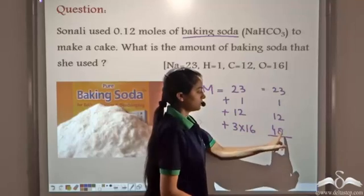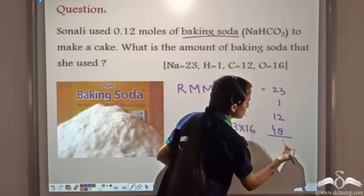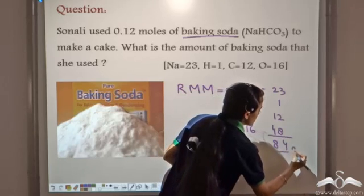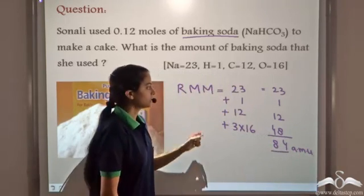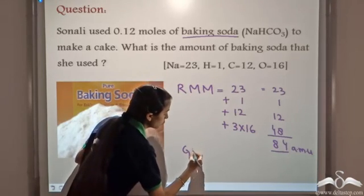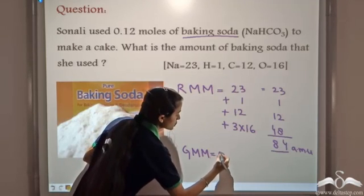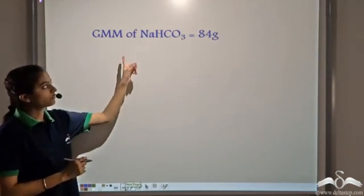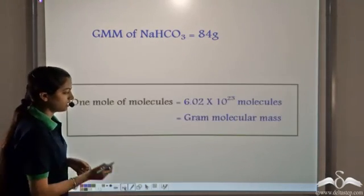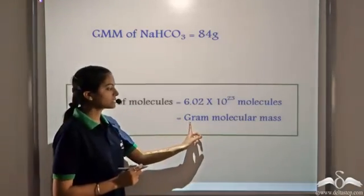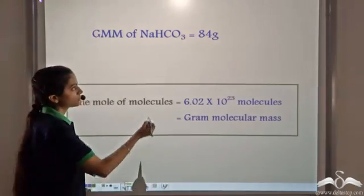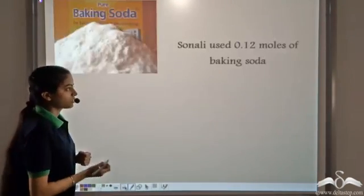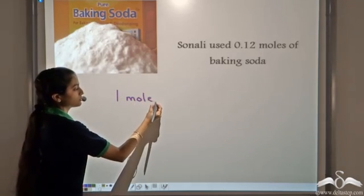Adding these up: 23 + 1 + 12 + 48 = 84. The relative molecular mass expressed in grams is the gram molecular mass, so the gram molecular mass of baking soda (NaHCO₃) is 84 grams. Recalling that 1 mole of molecules weighs equal to the gram molecular mass, we know that 1 mole of baking soda weighs 84 grams.